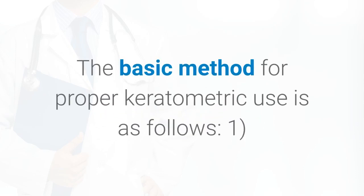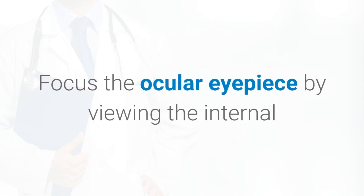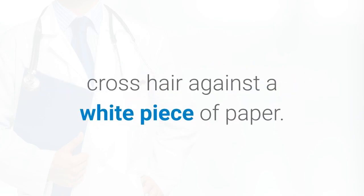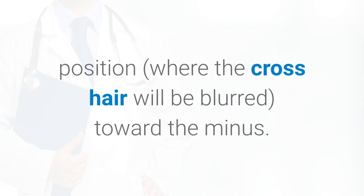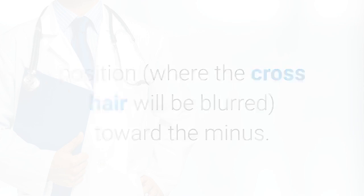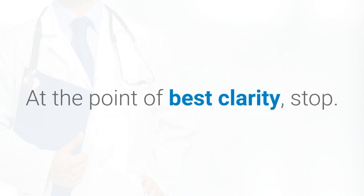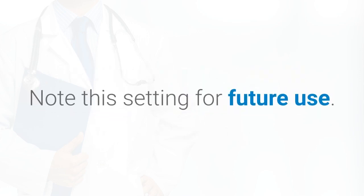The basic method for proper keratometric use is as follows. 1. Focus the ocular eyepiece by viewing the internal crosshair against a white piece of paper. Slowly adjust the eyepiece from its most plus position, where the crosshair will be blurred, toward the minus. At the point of best clarity, stop. Note this setting for future use.